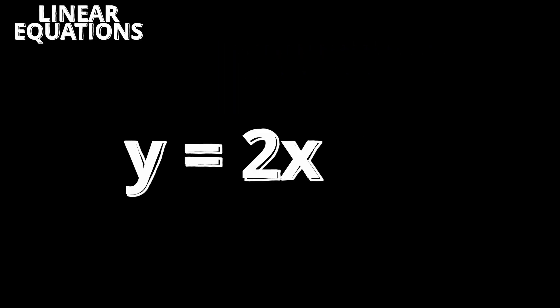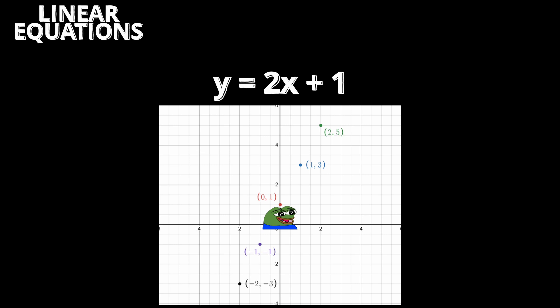For example, in y is equal to 2x plus 1, the slope is 2. Which means we go up two steps and right one step for every point.